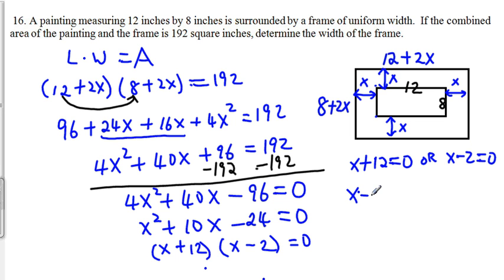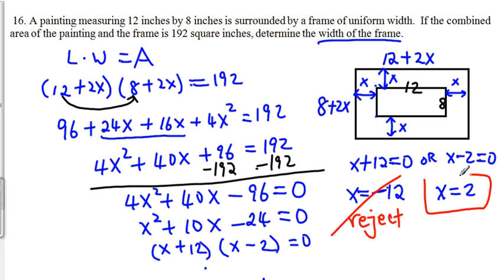So we get x equal to negative 12, or, x equal to 2. But, think about it. Since we are talking about the width of the frame, therefore, we are not able to have negative solutions. Therefore, we have to reject this one. This one is out. So the correct solution would be x equal to 2. The width of the frame is 2 inches.